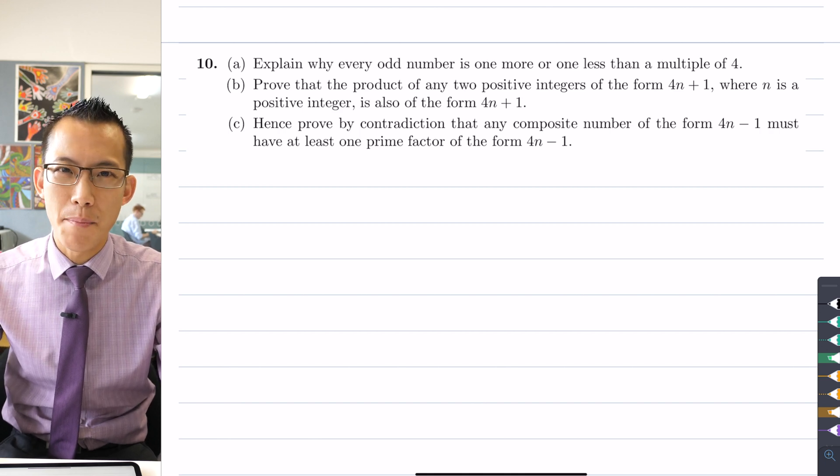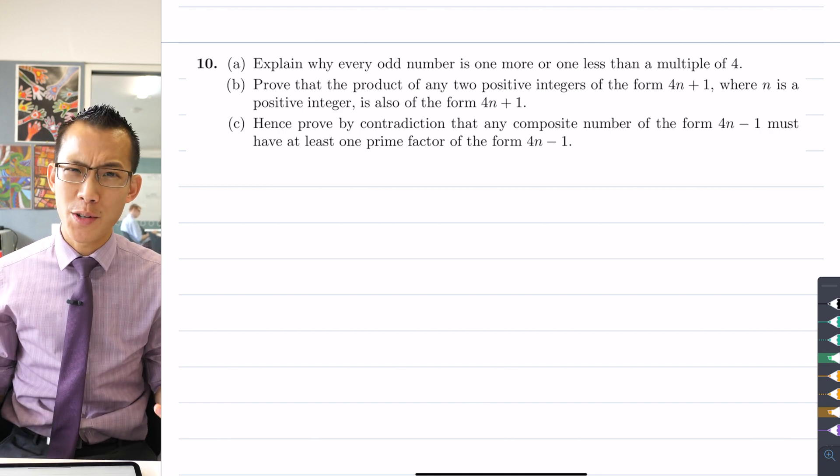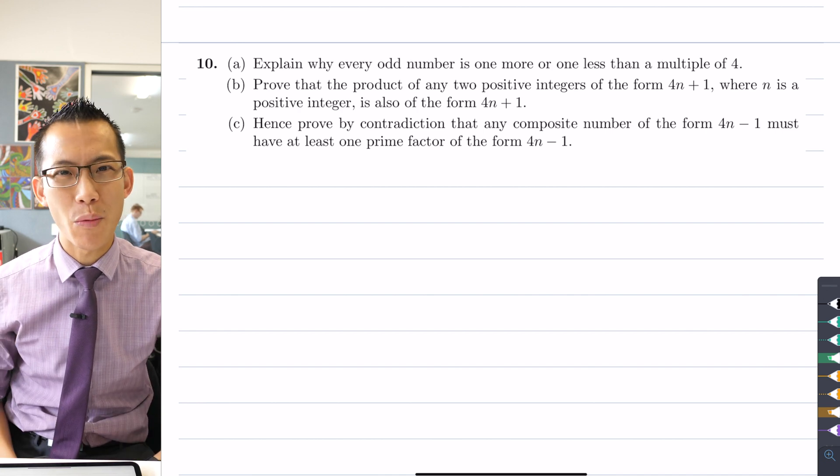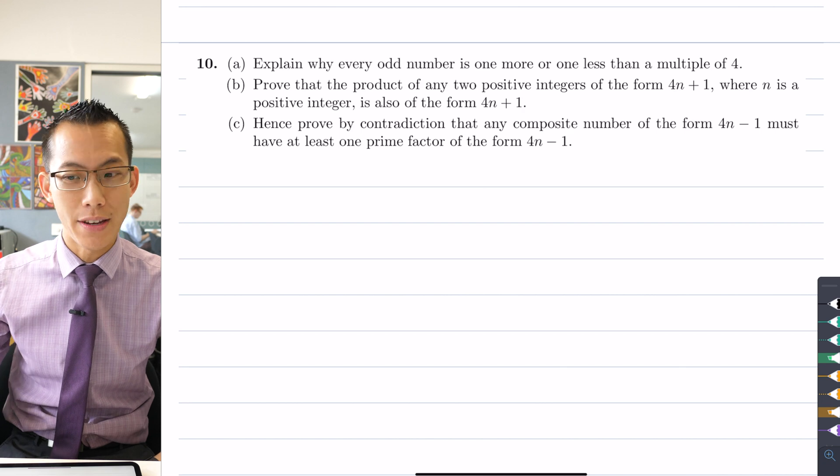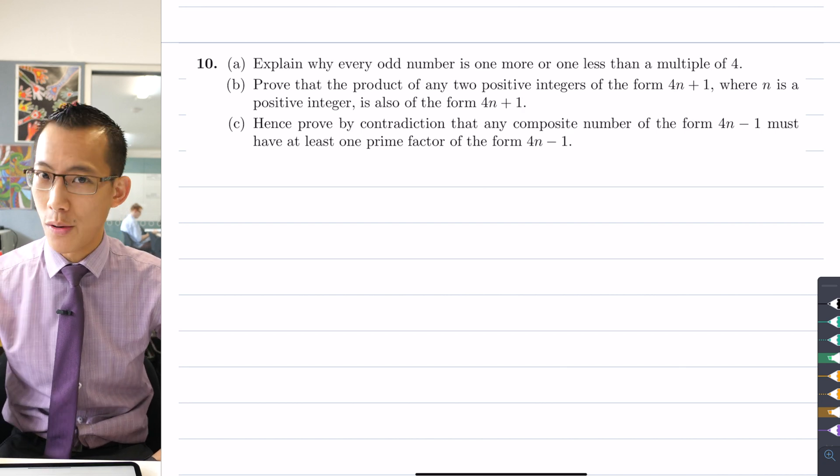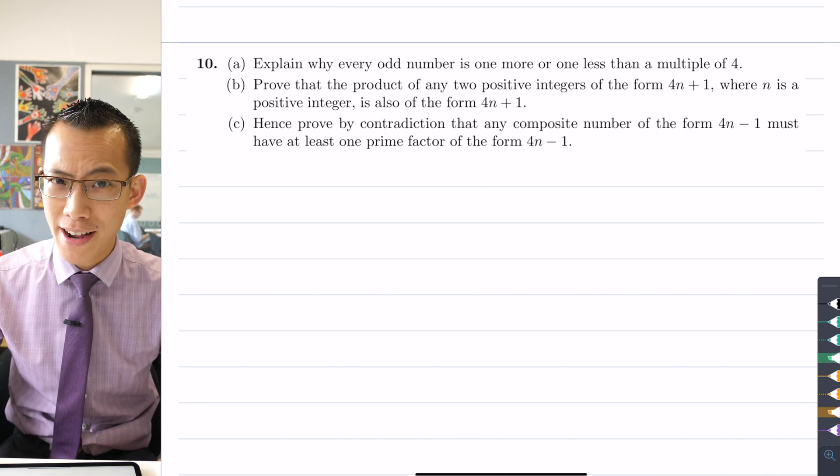We're going to have a look today at a proof by contradiction. Proofs by contradiction are pretty weird because we're working with negations, and unlike where we're used to thinking of things as proving something to be true, we're actually trying to go in the opposite direction.